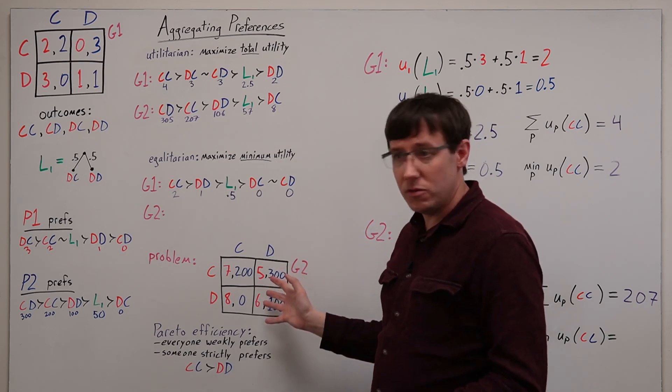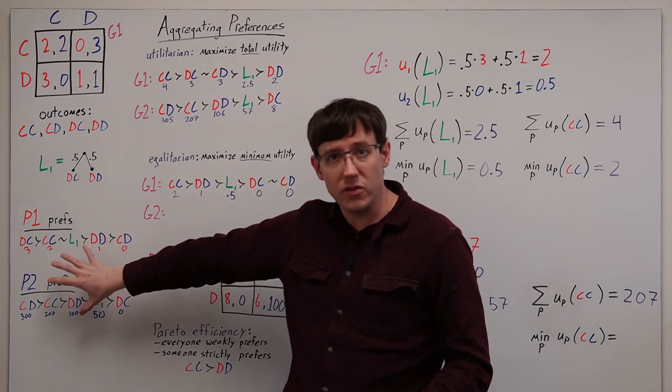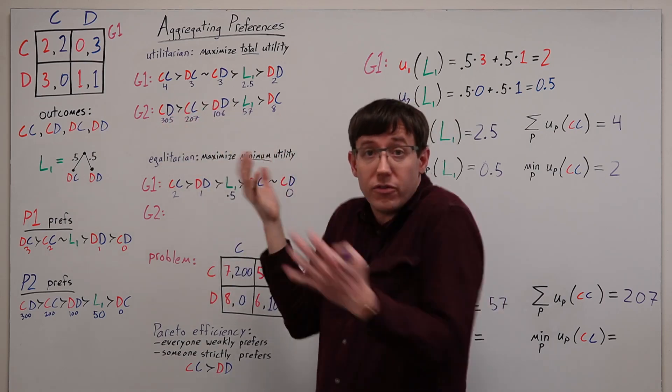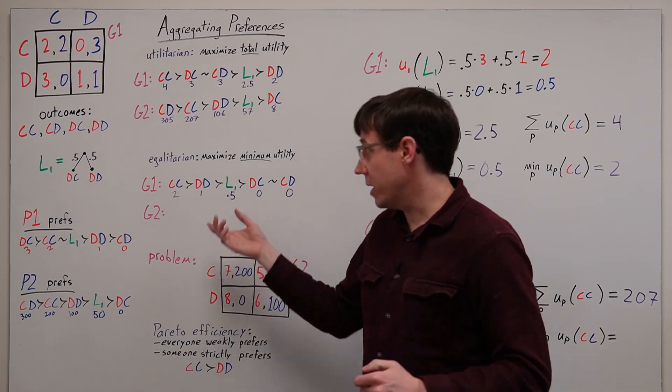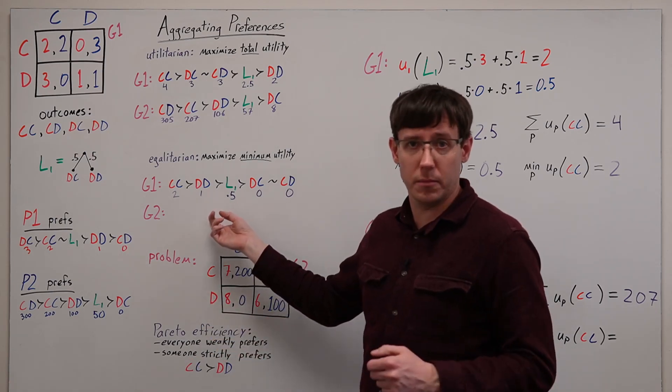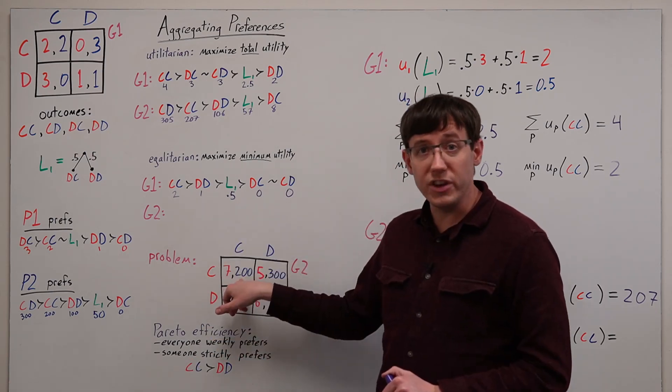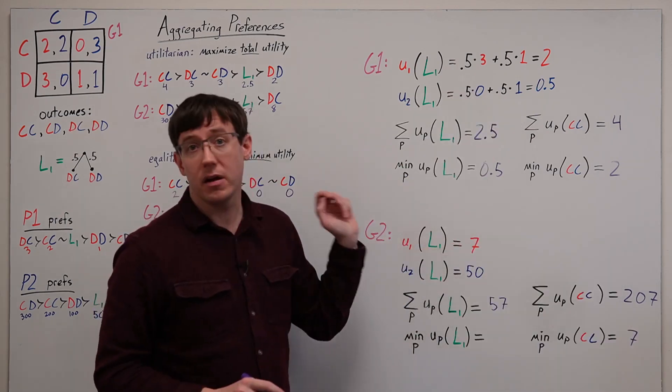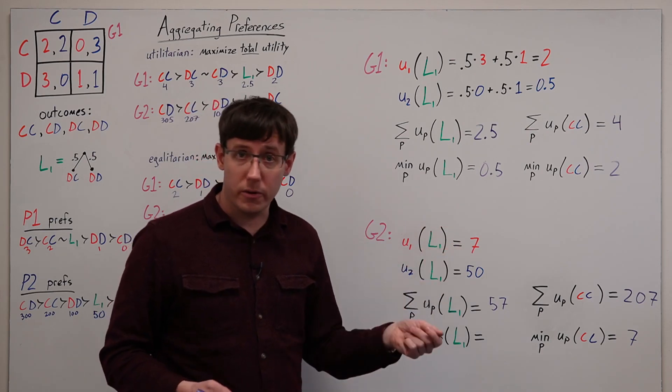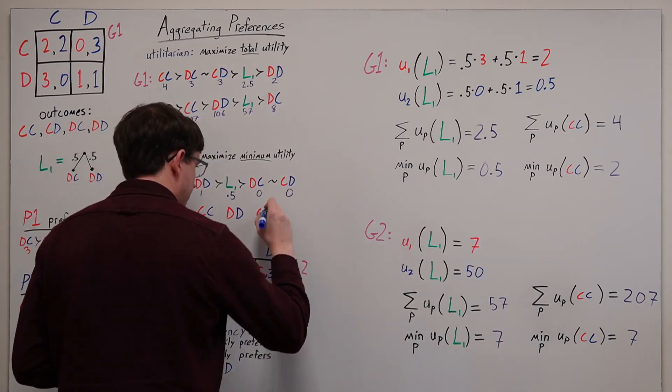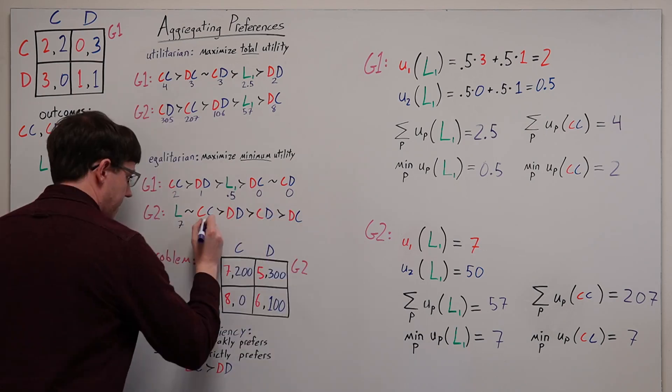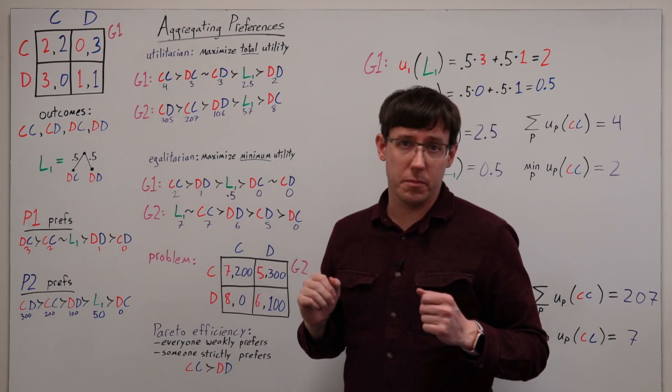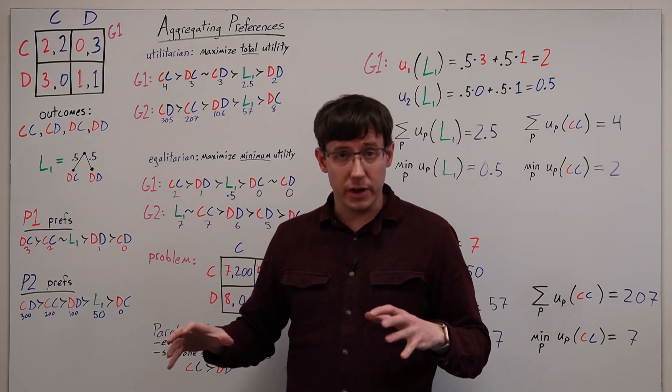So these new utilities, even though they express exactly the same preferences, have completely changed our ordering of the outcomes of the game. And we'll see that we've also messed up the egalitarian ordering. The minimum payoff for CC is 7, which is equal to the minimum expected payoff among the two players for the lottery. So the lottery now appears in a tie at the top of our ordering.